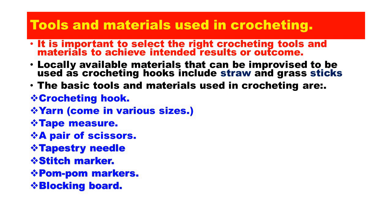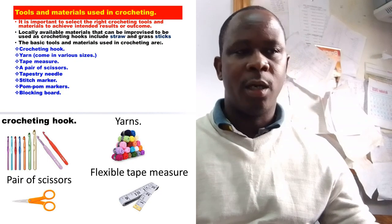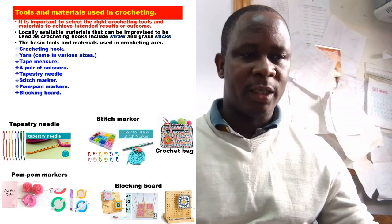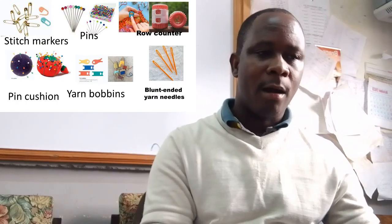The basic tools that you need in crocheting include a crochet hook, yarn, tape measure, a pair of scissors, tapestry needle, stitch marker, stitch marker or locking marker, blocking board, among others. You will see them in the picture below.